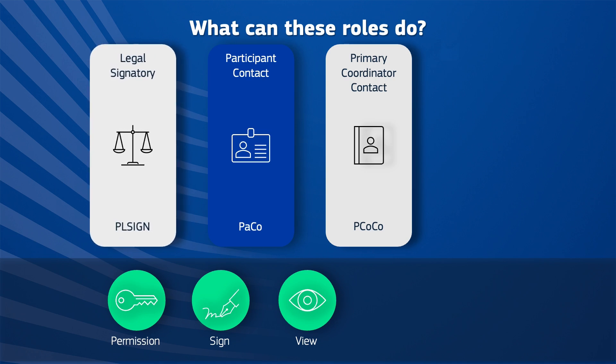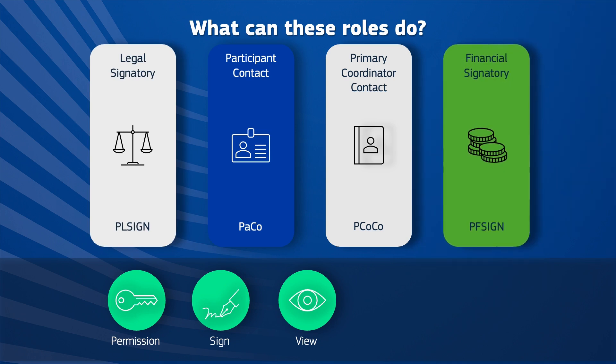A PL sign must be specified for each project and contract. The PF sign role is specific to eGrants, allowing them to officially sign financial statements for their organization, and must also be designated for each project.